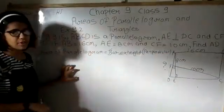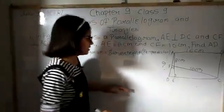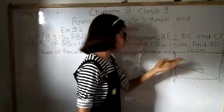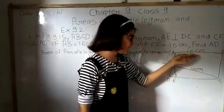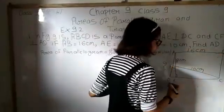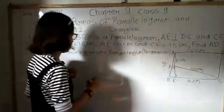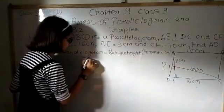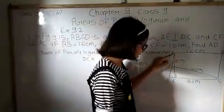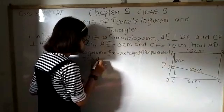Now this question we can solve by two ways. Base into height. What is our base? Our base AB equals to 16 centimeter. So if AB equals to 16 centimeter, obviously opposite side of AB, that is CD, will be also 16 centimeter. So CD is our base which we can also say DC. DC into what is our height? Our height is AE, that is 8 centimeter.